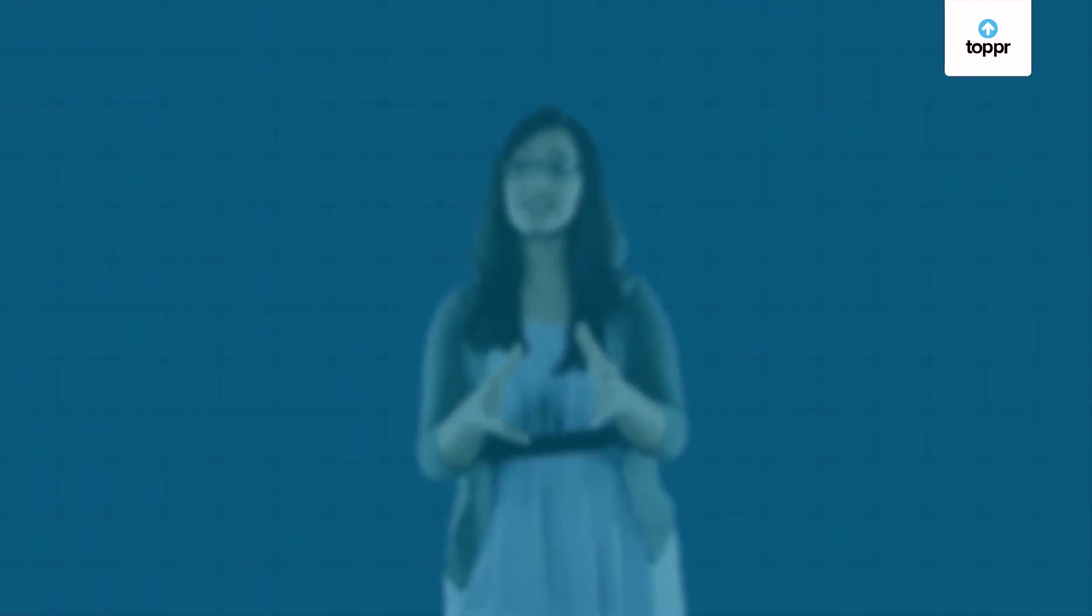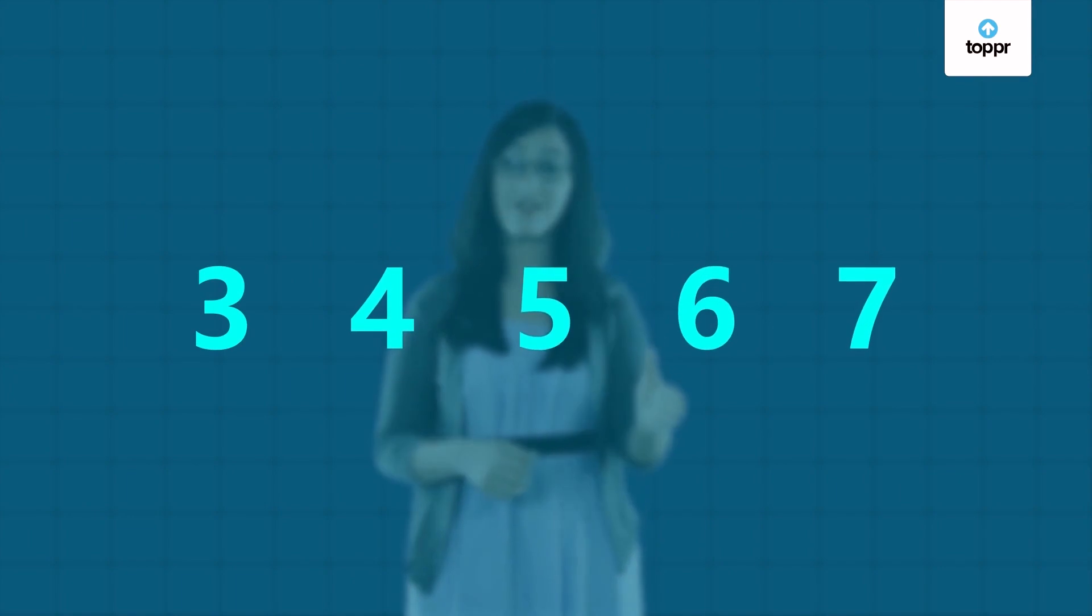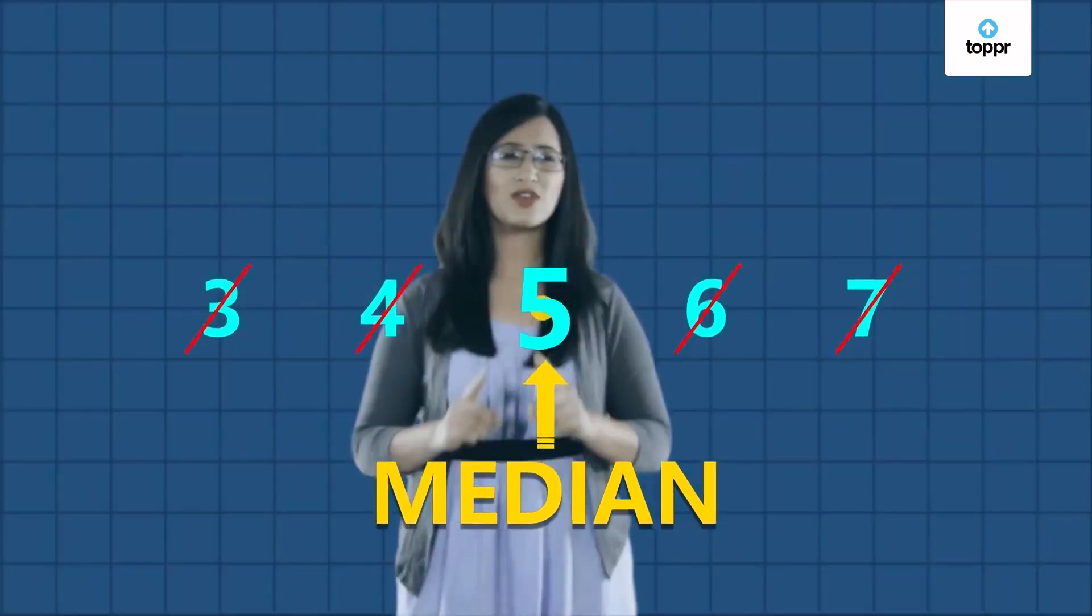For example, the median of the numbers 3 to 7 would be the number 5. Let's look at another example to understand how the median of a data set can be found.